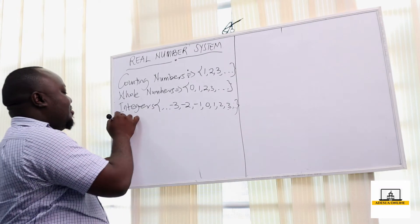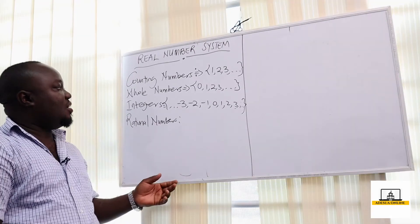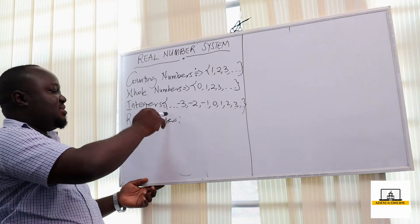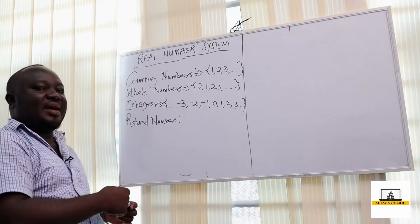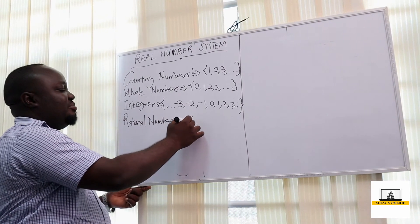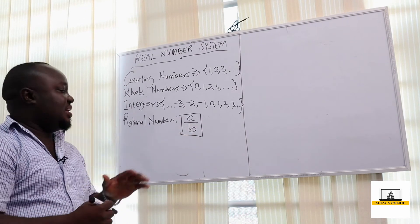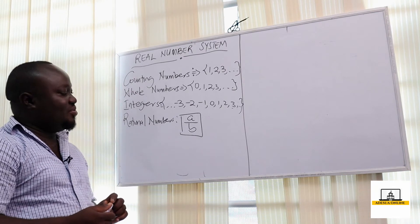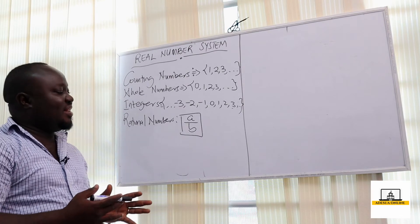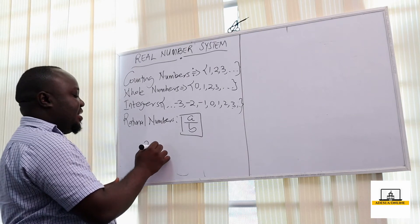After integers we also have what we call rational numbers. Rational numbers consist of counting numbers, whole numbers, integers, and fractions. If I have a fraction a over b and I can express any decimal in the form of a over b, then this is a rational number. One unique thing about a rational number is that it has an end and the values keep repeating.